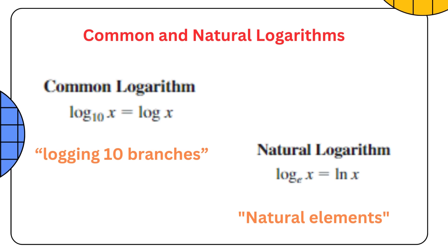Common and natural logarithms. A common logarithm is a logarithm with base 10, denoted by log base 10 or simply log. A natural logarithm is a logarithm with base e, denoted by log base e or simply ln. To remember: log base 10 uses the phrase 'logging 10 branches' — so simply use log. For natural logarithm, remember 'natural elements' with base e, as e for elements.